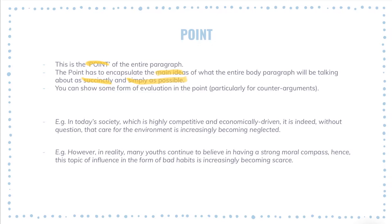You can also show some form of evaluation in the point — this can apply to arguments as well as counter-arguments — in the form of a Singapore characteristic, a societal characteristic, or in the form of feasibility and practicality. For example: 'In today's society, which is highly competitive and economically driven, it is without question that care for the environment is increasingly becoming neglected.' From here you can infer the question is about the environment. The evaluative pointers here include 'competitive society' and 'economically driven,' while 'care for the environment' and 'neglected' are the topic.